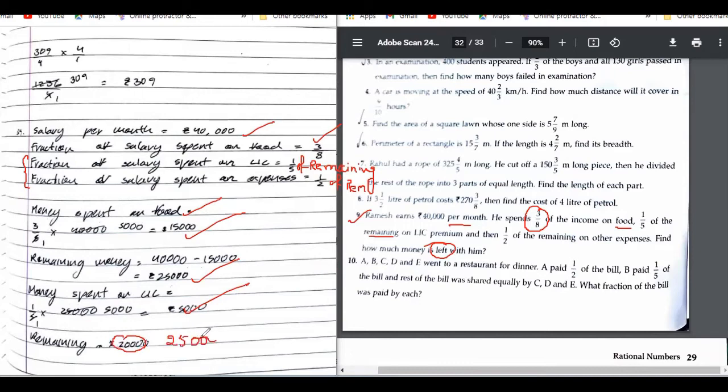So 25,000 minus 5,000. So remaining money is 20,000. This is perfect.